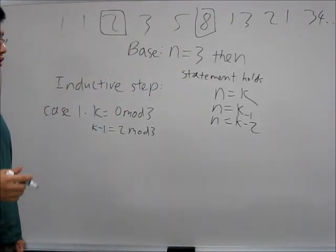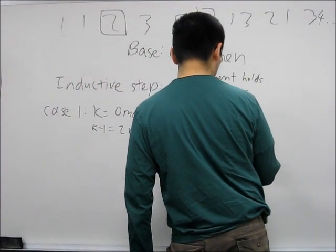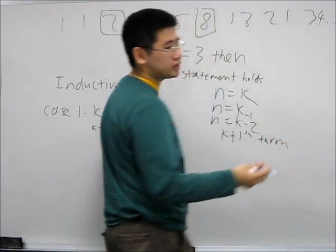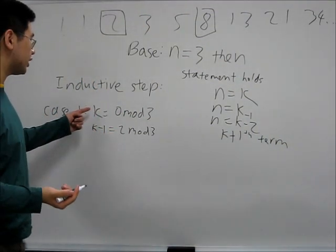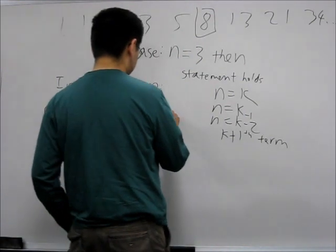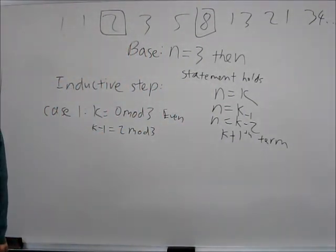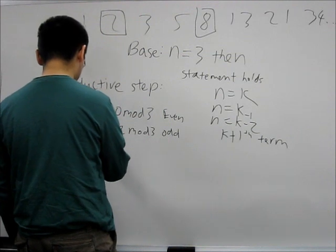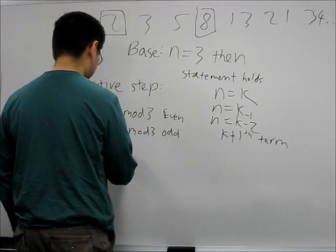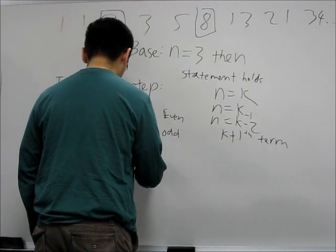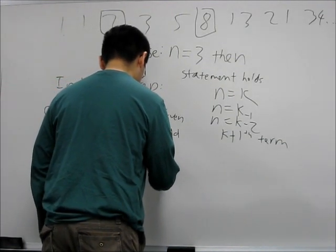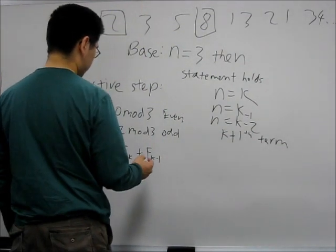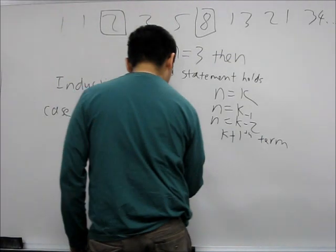What we're trying to do is prove that the k plus 1 term also satisfies the property. Given that k is divisible by 3, it's even. And k minus 1 is not divisible by 3, meaning that it's odd. So F of k plus 1 is equal to F of k plus F of k minus 1, which is the sum of an even and odd number. So this is actually going to be odd.